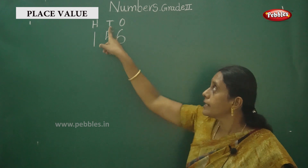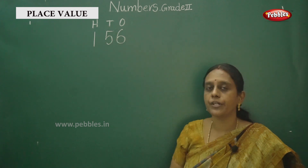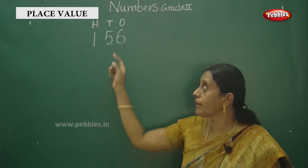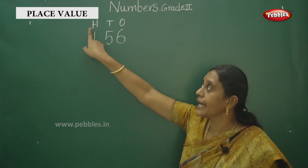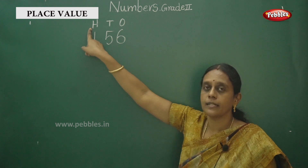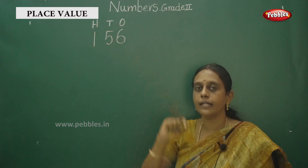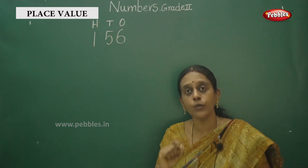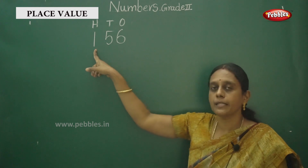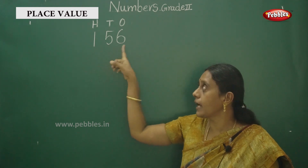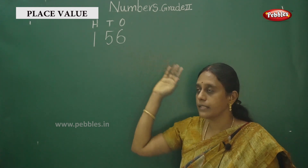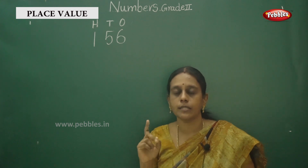Okay — T, what about Tens? Ten, ten, okay, ten. That is H — 100, 100, 100. Okay, so ones is 1, tens is 10, hundreds is 100.